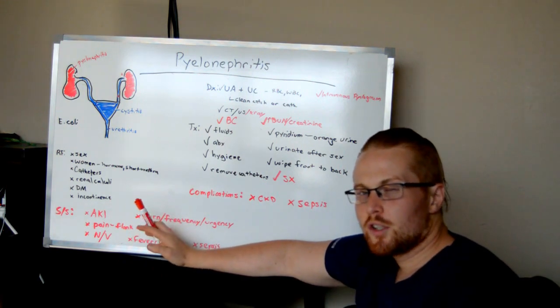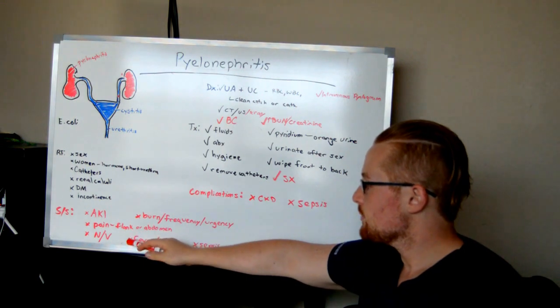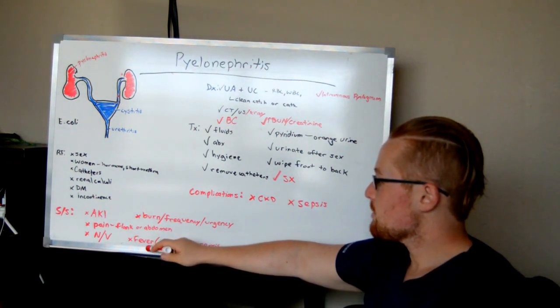Instead of just nausea like with urinary tract infection, you might have nausea and vomiting. You're still going to have fevers because you have fever with any infection, but it might be severe enough that you have chills.